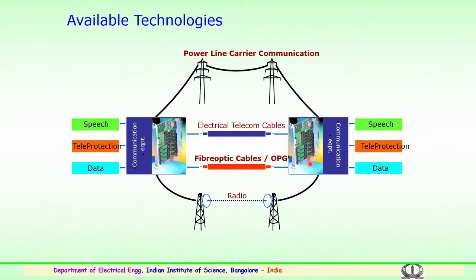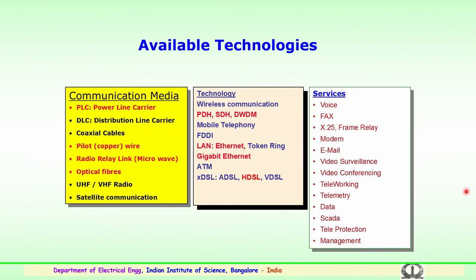Further, the communication of this equipment could be expanded for speech, or it could be for teleprotection, or it could be for data transfer. Several of these benefits are being obtained with the technologies for communication in power networks. Looking further at the available technologies in the communication media — what type of technology is being adopted and what services could be provided with the available technology and communication media are highlighted here.